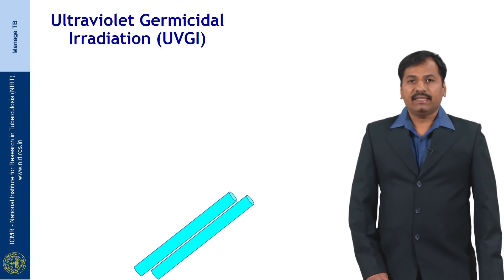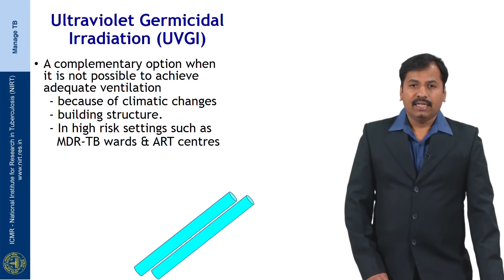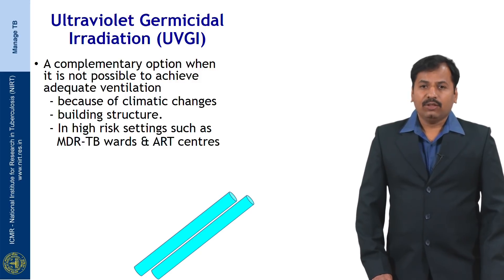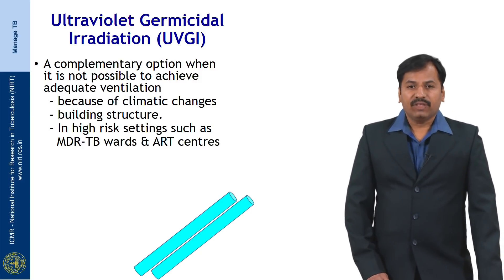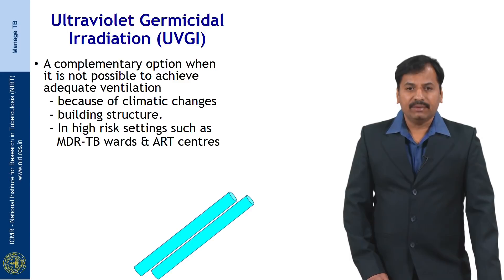Ultraviolet germicidal irradiation is one of the effective equipment available to control infections in high risk settings like MDR TB wards. It is a complementary option when it is not possible to achieve adequate ventilation because of climatic changes, including building structures in high risk settings such as MDR TB wards and ART centres.